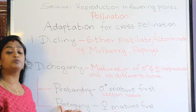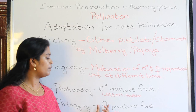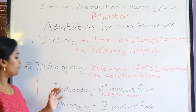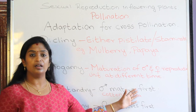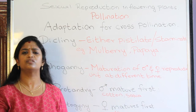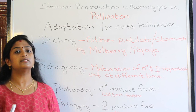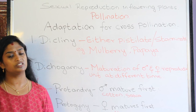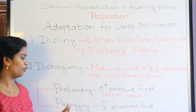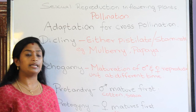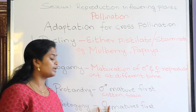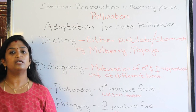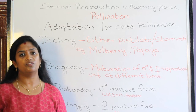The second condition is called protogyny, where the female reproductive unit of the flower matures first. The example is Mirabilis jalapa. If the male reproductive unit matures first — that is, if the anther matures first — it releases the pollen grain. Since the female reproductive unit of the same flower is not yet matured, the pollen is transferred by the external agency to another flower for fertilization. Similarly in protogyny, when the female unit matures first, it receives matured pollen grains from a different plant.